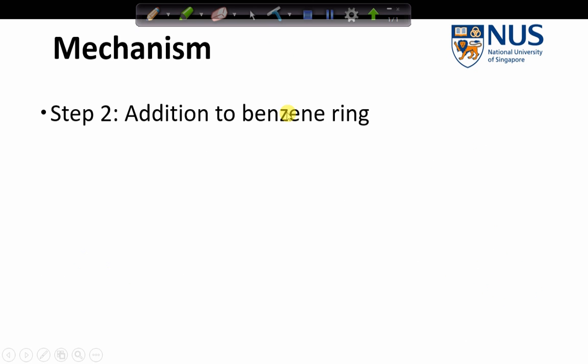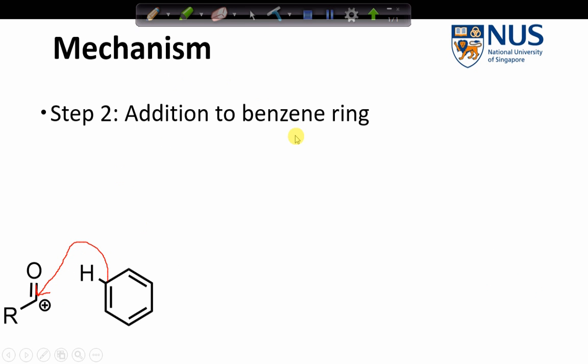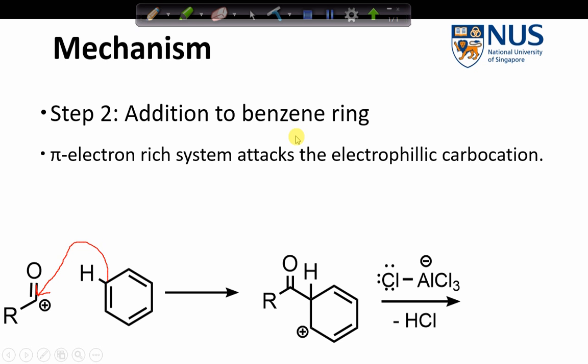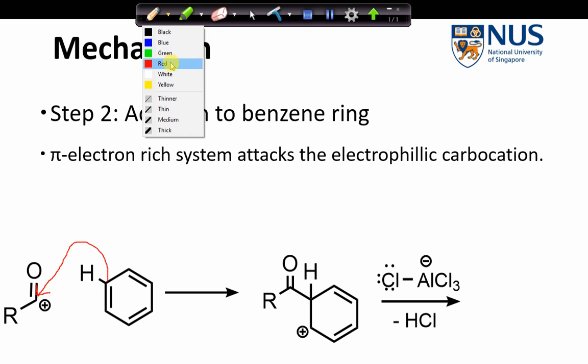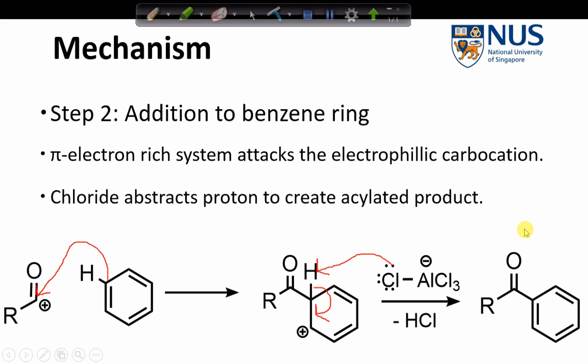So just as before, the next step is addition to the benzene ring. So again, we get nucleophilic attack from the benzene ring towards the carbocation. And we get an intermediate step. And again, we get abstraction of the proton by the halogen. We also get re-aromatization of the ring, losing HCl, and we get our acylated product.